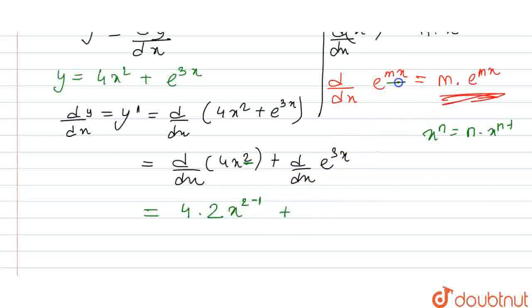Plus differentiation of e to the power of mx is m times e to the power of mx. Here m is 3, so it will be 3e to the power 3x.